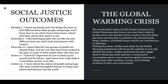Next we're covering the social justice outcomes and the global warming crisis. For the outcomes: Identity 5 — I know my family and I do things the same and different from other people and groups, and I know how to use what I learned from home, school, and other places that matter to me. Diversity 6 — I like knowing people who are like me and different from me, and I treat each person with respect. Diversity 10 — I know that the way groups of people are treated today and the way they have been treated in the past is part of what makes them who they are. Action 17 — I know what's important for me to stand up for myself and for others, and I know how to get help if I need ideas on how to do this. Justice 15 — I know about the actions of people and groups who have worked throughout history to bring more justice and fairness in the world.